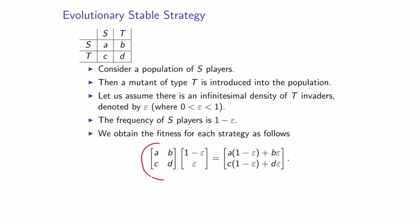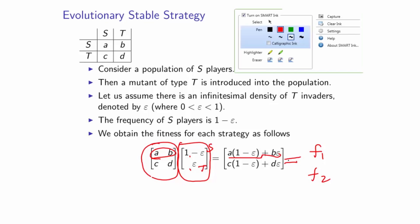We multiply the payoff matrix by the vector with densities, where the first quantity is the density of S and the second is the density of T players. When we carry out this matrix-vector multiplication, the first row times the column gives A times quantity one minus epsilon plus B times epsilon, and the second entry gives C times quantity one minus epsilon plus D times epsilon. This is what we call the fitness vector — F1 and F2.